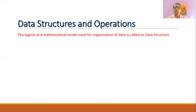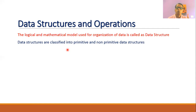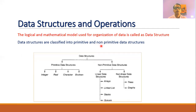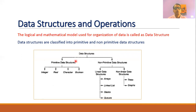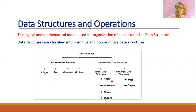A data structure is a way of organizing data using a logical and mathematical model. Data structures can be classified into two categories: primitive data structures and non-primitive data structures. Primitive data structures include integer, real, character, and boolean. Non-primitive data structures include linear data structures — such as arrays, linked lists, stacks, and queues — and non-linear data structures such as trees and graphs.